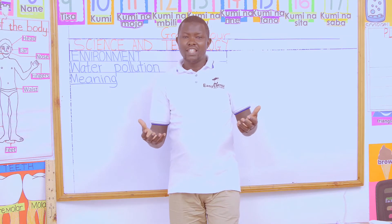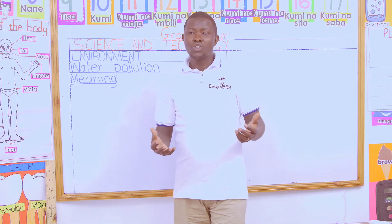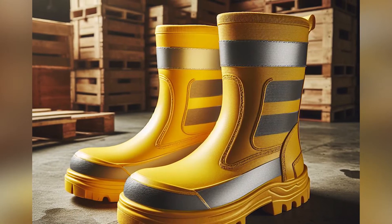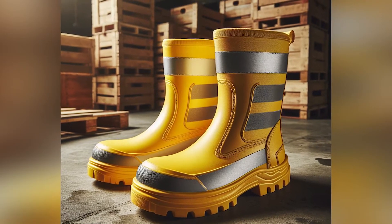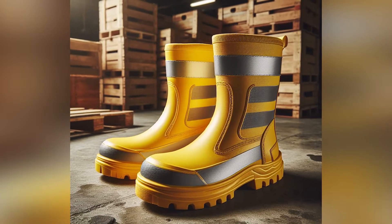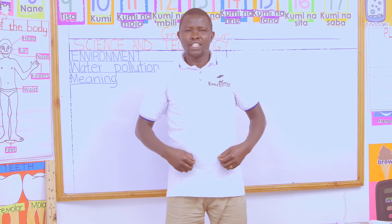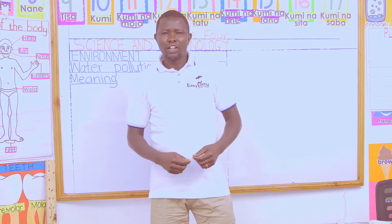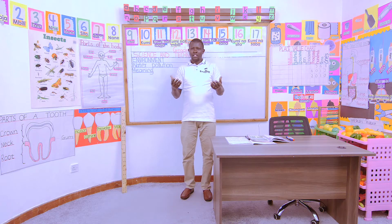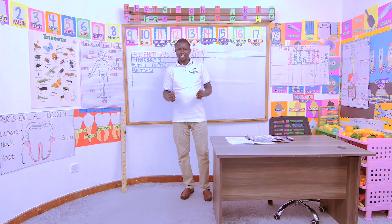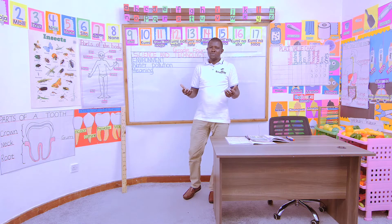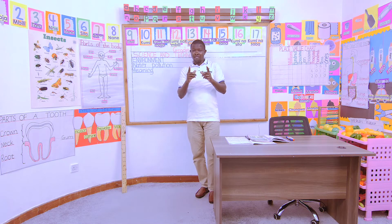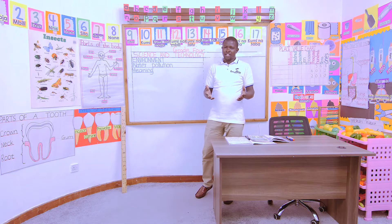We also said we should wear safety boots or shoes which can protect us from harming ourselves, and an overcoat to protect our clothes from being dirty. Those are some of the safety measures we said we should observe when working in an air polluted environment.